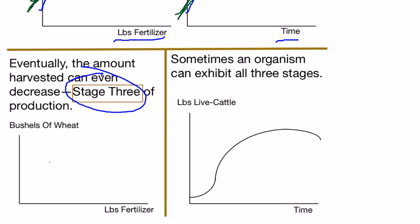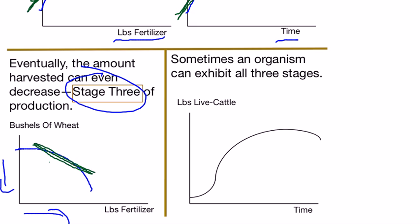Stage three is when an input is not productive — you use more of an input and you actually get less output. Stage three looks like a curve where applying more fertilizer gives you less wheat, and the slope of the tangent line is actually negative, meaning a little more fertilizer results in less wheat. The same thing can happen with cattle as they age past their prime.